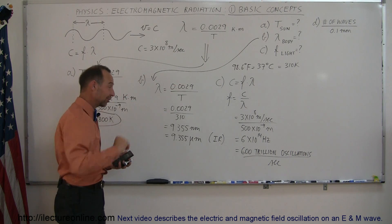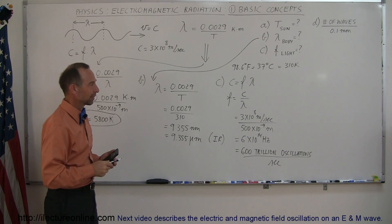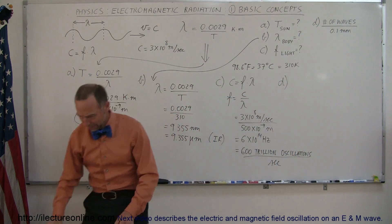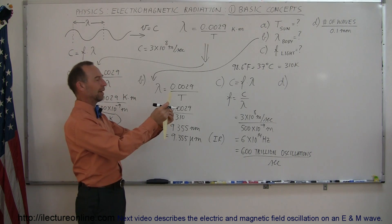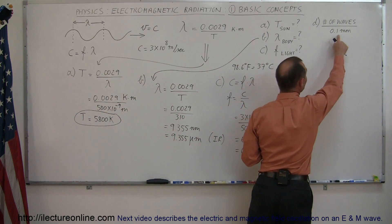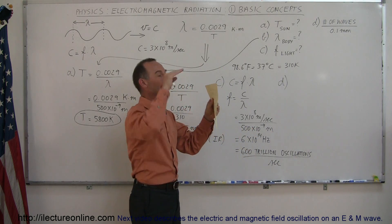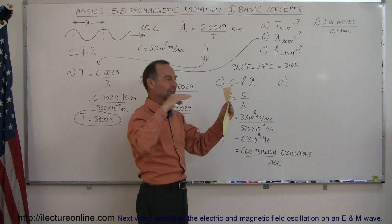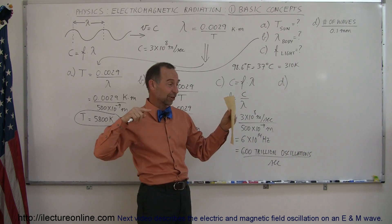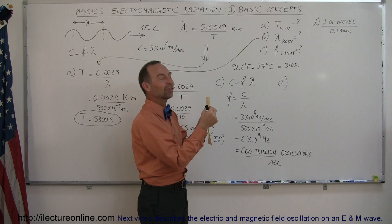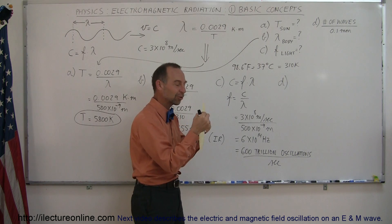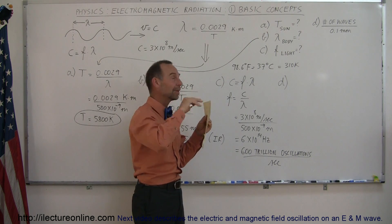Another way of looking at electromagnetic radiation: imagine the thickness of a piece of paper, which is about one-tenth of a millimeter. For Part D, we're going to figure out how many times light cycles up and down as it travels through space during the time it takes to cross the thickness of this piece of paper. If light travels 186,000 miles per second, how long does it spend traveling past paper that thin? And during that extremely short time, how many times does it cycle up and down?